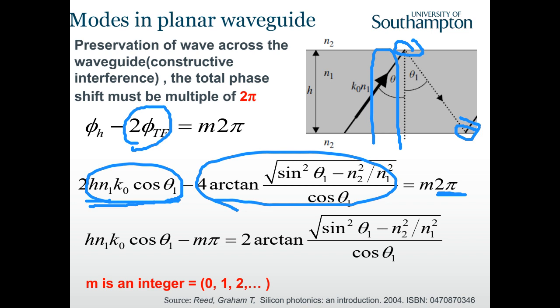We need m to be an integer so that the total phase is cancelled and the optical phase is preserved. If only m = 0 is valid, it is a single-mode fiber. If m can take multiple integer values, it is a multi-mode fiber. If no integer m satisfies the condition, the light cannot propagate through the fiber.